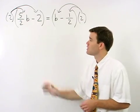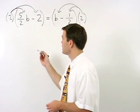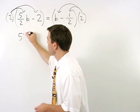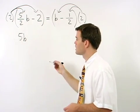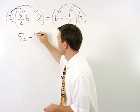On the left, 2 times 5 halves b is 5b, and 2 times negative 2 is negative 4.